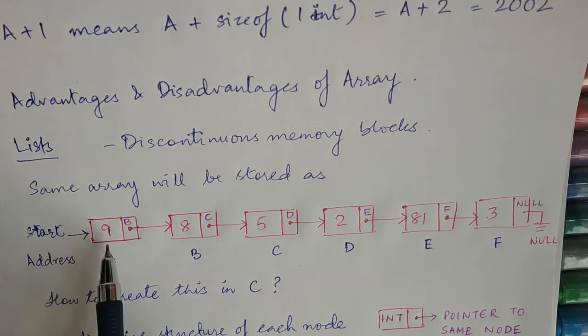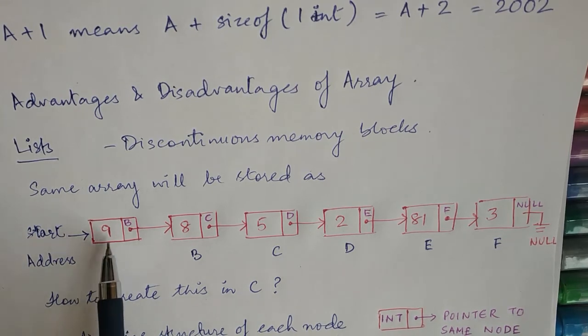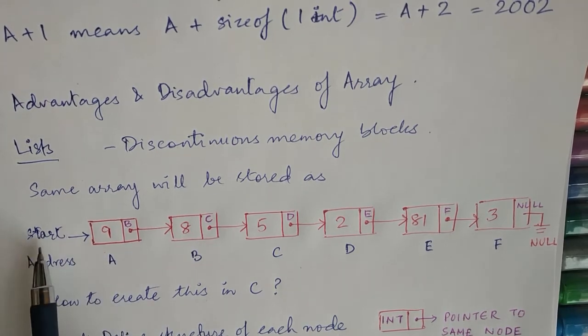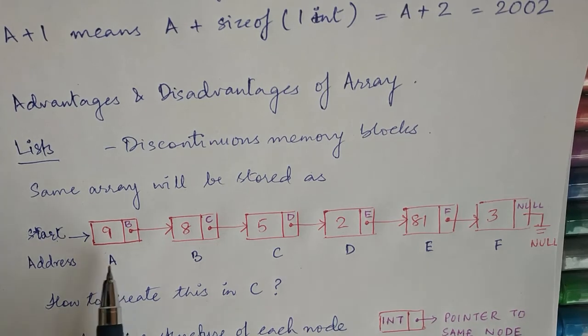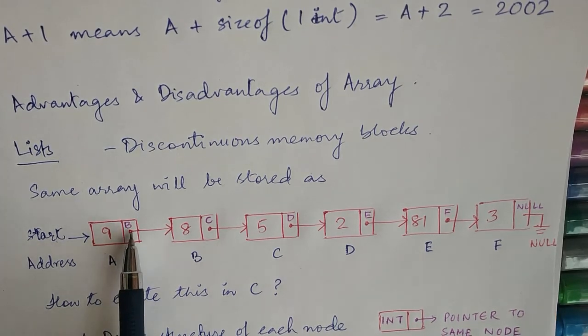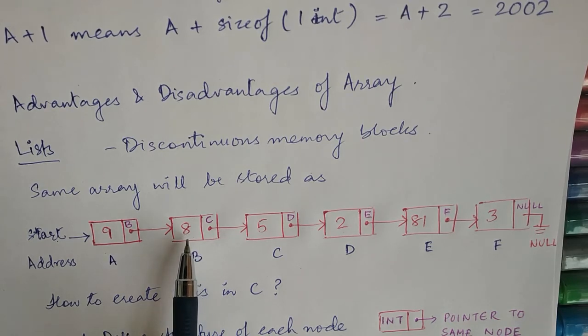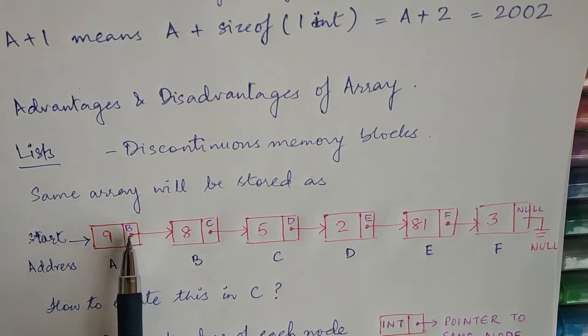If 9 is your first element, then you have a start pointer which points to the first element of the linked list. So the start pointer will have the address of 9. For simplicity, just put the alphabet A as the address of the node 9. So node 9 is present at address A, and the start pointer will have the address of 9.